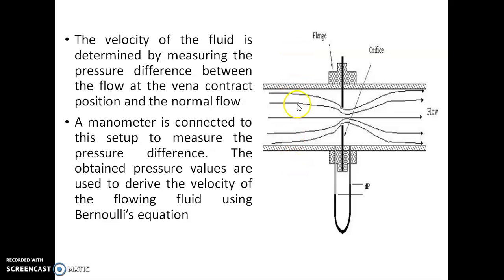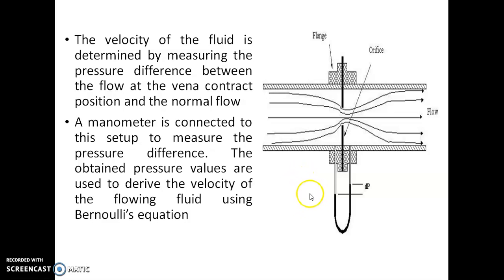Section 1-1 is upstream of the fluid flow, and section 2 is taken at the vena contracta. Manometer readings are taken at two places: one before reaching the orifice plate, and section 2 is at vena contracta. The manometric head H is measured, and flow can be measured using the formula: Q = CD × A1 × A2 × √(2GH) / √(A1² - A2²).